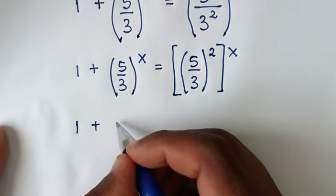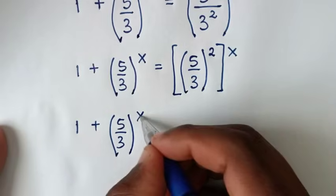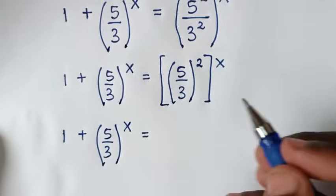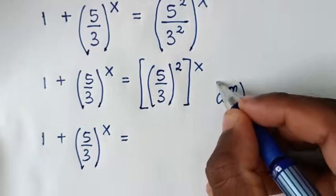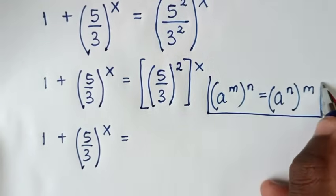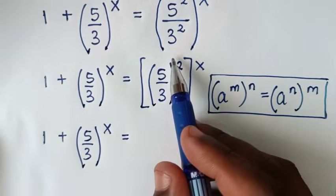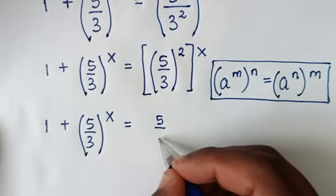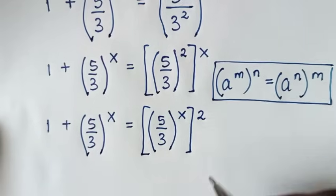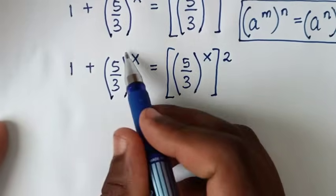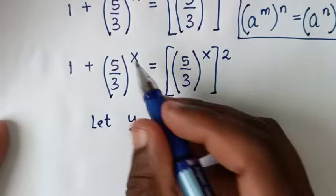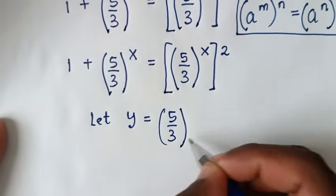In the next step it will be 1 plus (5/3)^x is equal to (5/3)^(2x). We apply the exponential rule: a^m raised to the power n equals a^(mn). So (5/3)^x is common, and we let y equal to (5/3)^x.